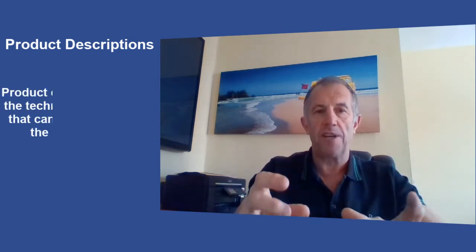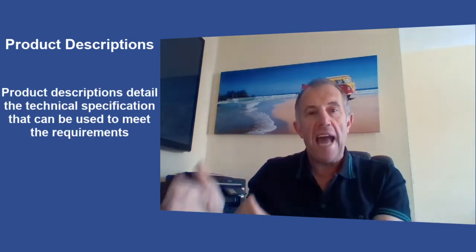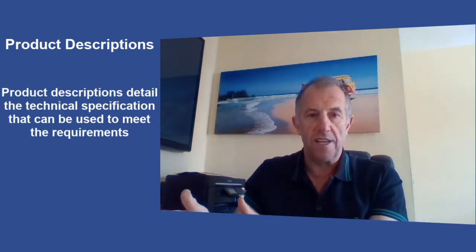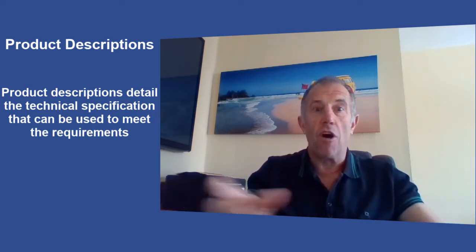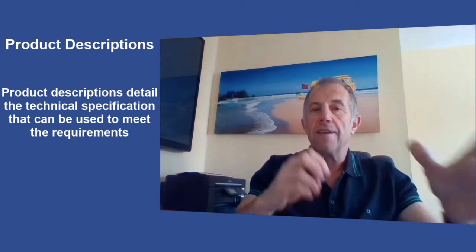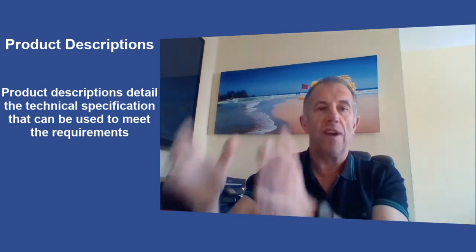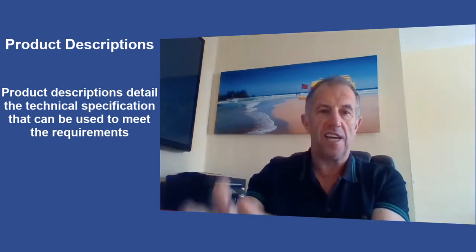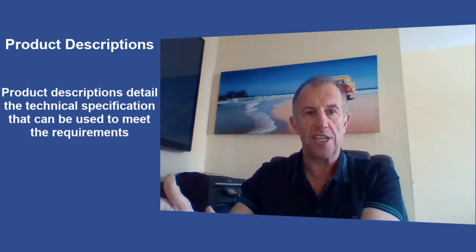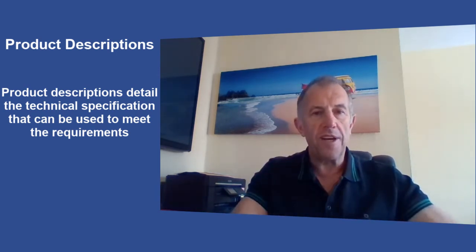The project takes those requirements and builds them into a quality management environment where they create things called product descriptions. Product descriptions are detailed explanations of what the end goal for each requirement is. For example, if we have a requirement for a car, the product description will say: this car will have four wheels, this size of engine, carry this many people, and have this level of functionality.